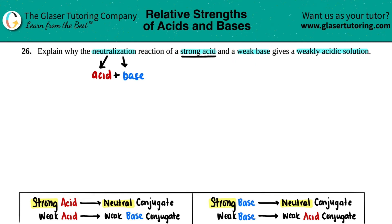Pick any one of your six strong acids — it could be HCl, HBr, HI, there are three others. Let's just make it easy and pick HCl. Now we just have to pick a weak base. There are six strong bases, so you just need a base that isn't one of those six — for example, CN⁻. The one we're going to use here is ammonia, NH3. NH3 is always going to be acting as a base, so NH3 is a weak base.